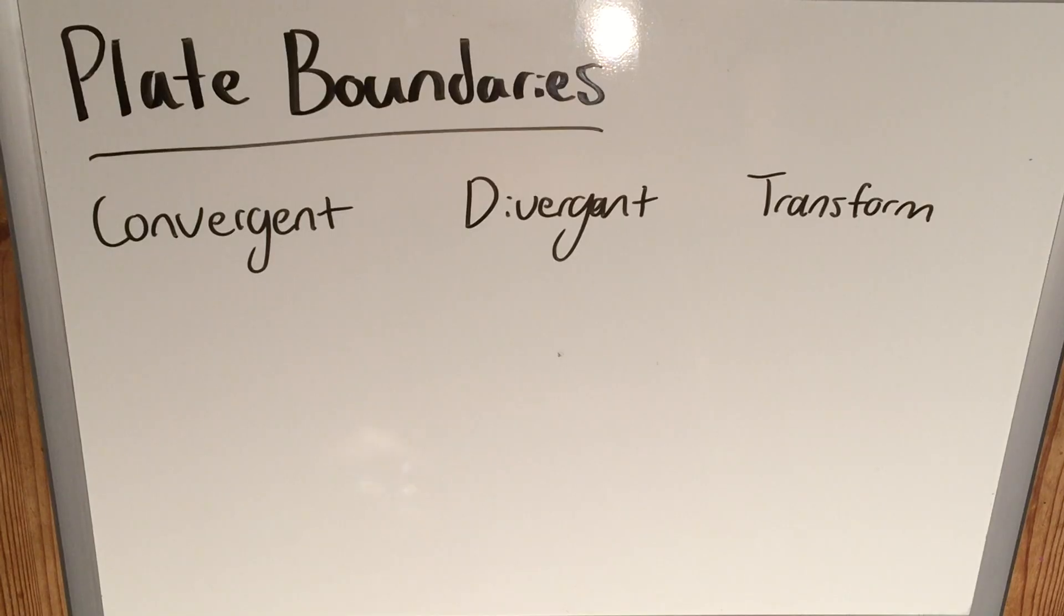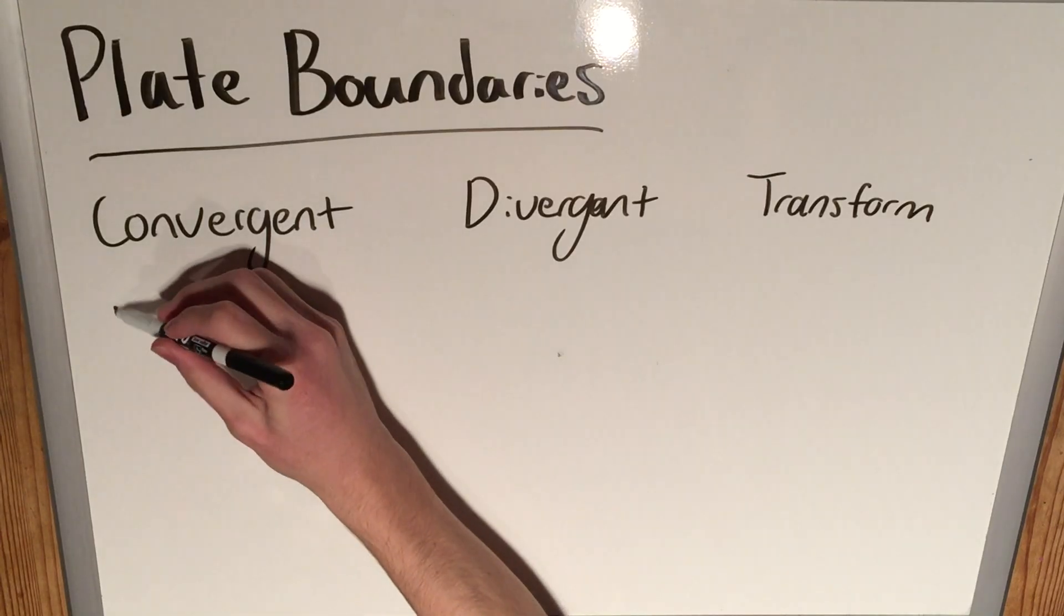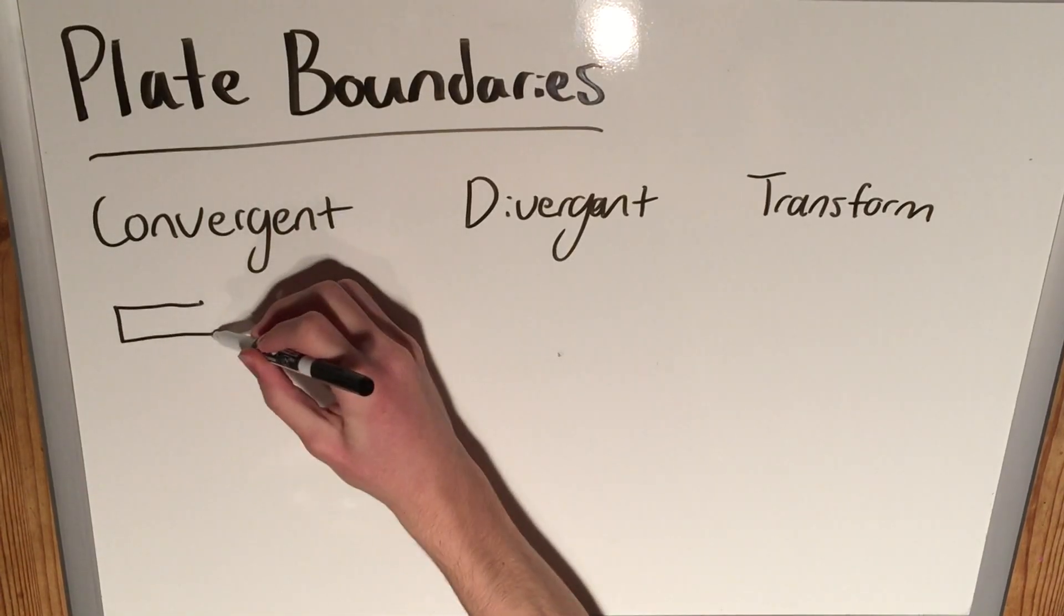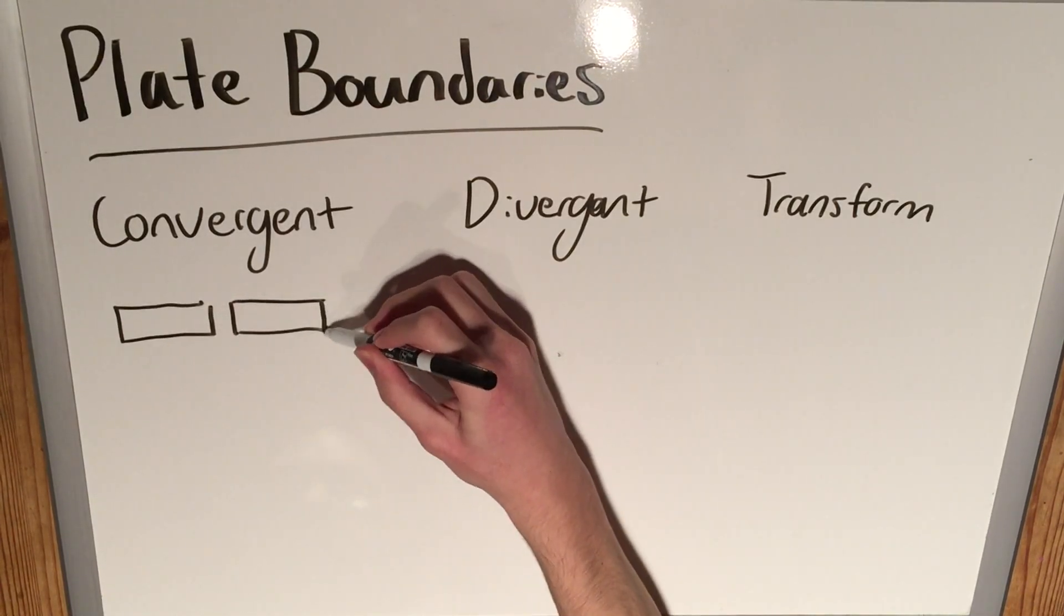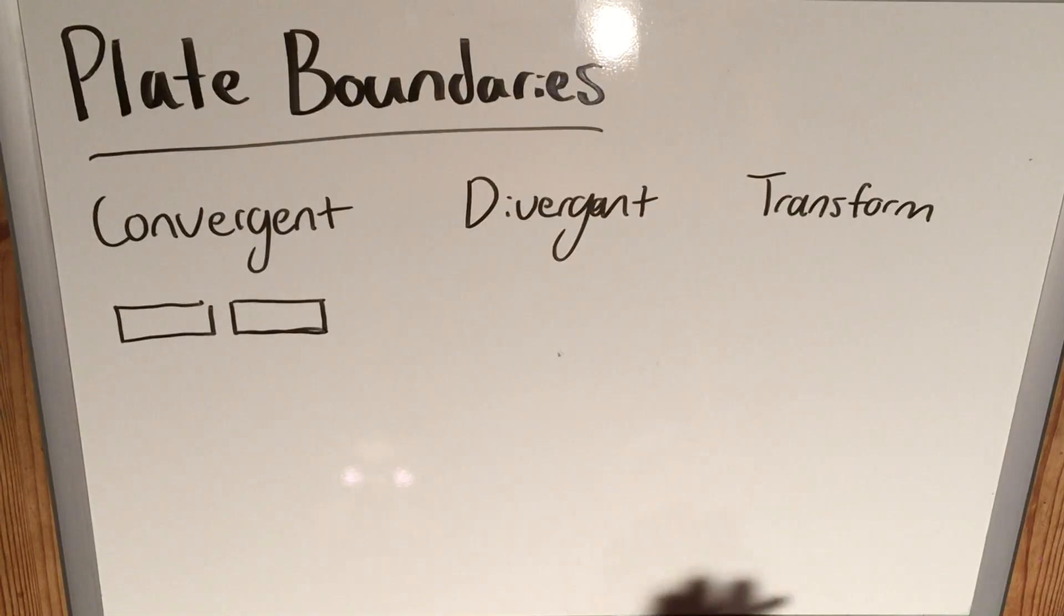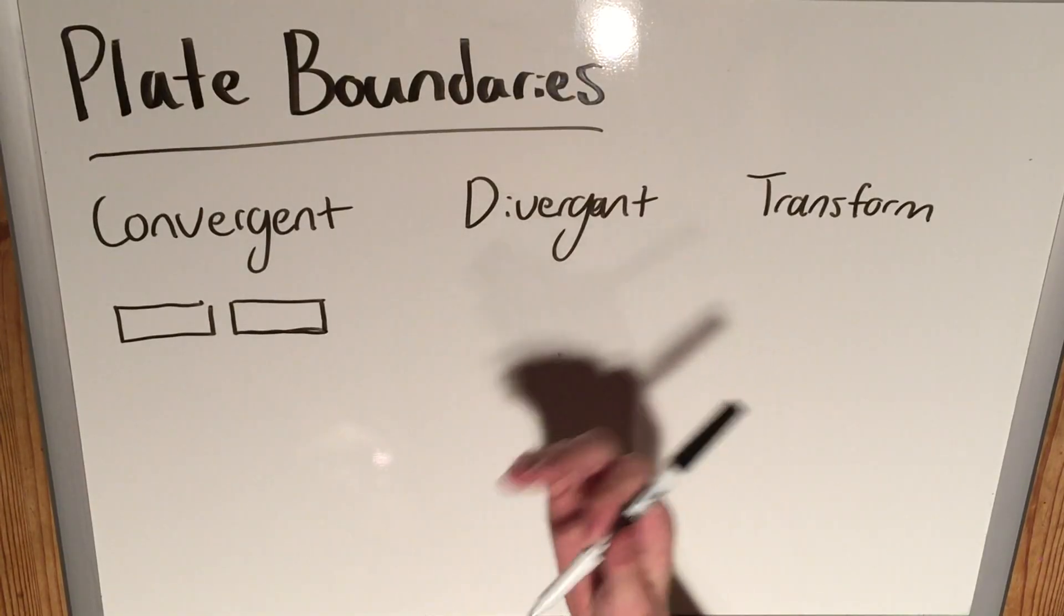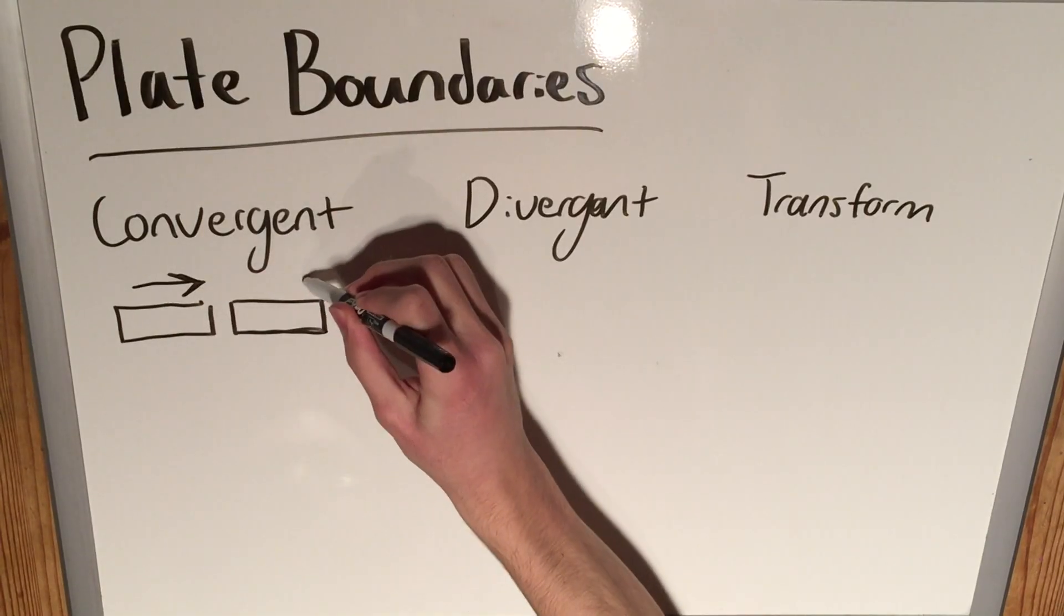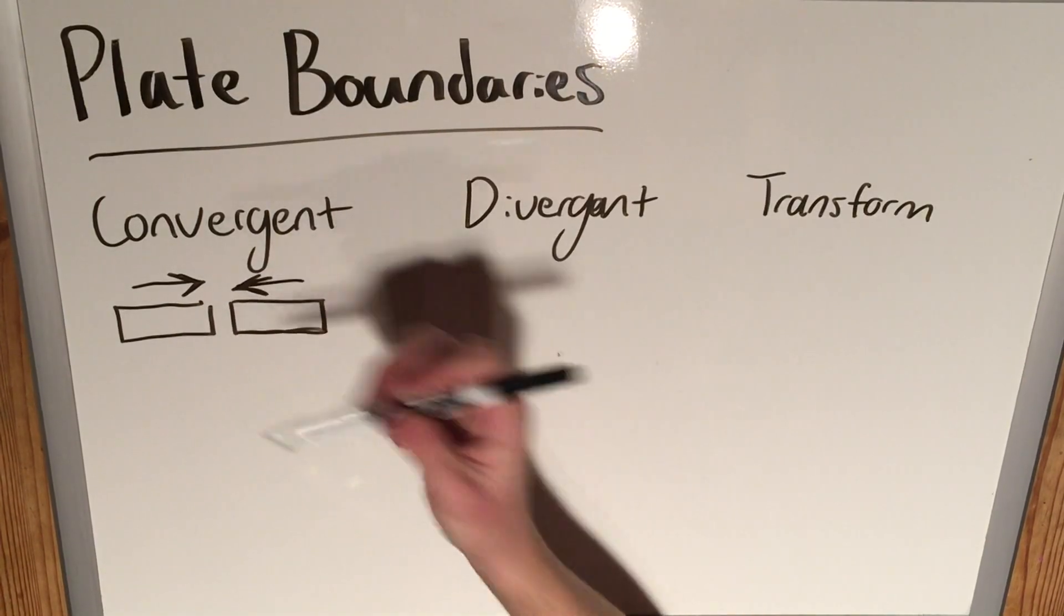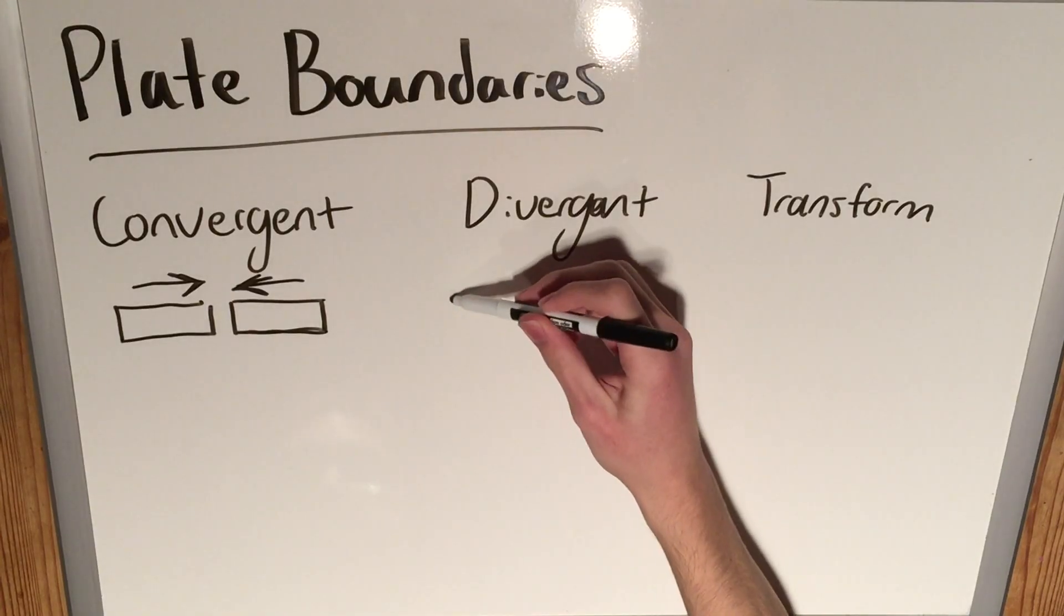In convergent, in all cases we will have two plates, represented by these two rectangles, and they will be moving towards each other. They will be colliding. So we can draw arrows of movement here, two plates coming together.